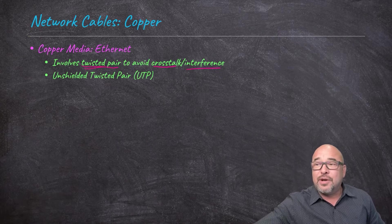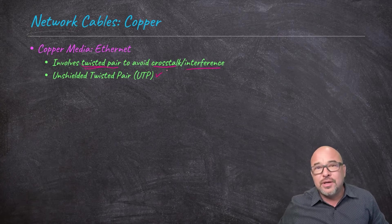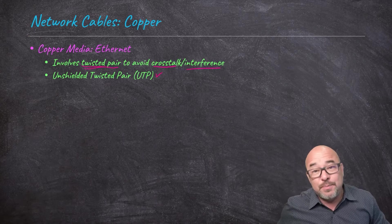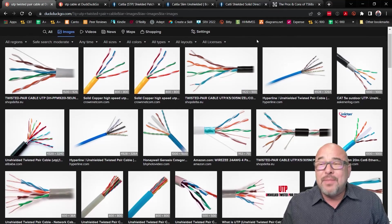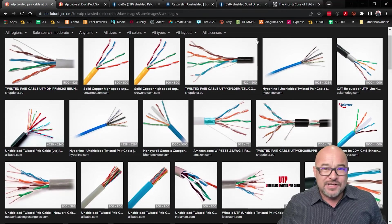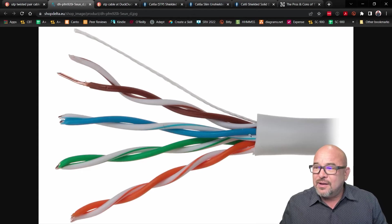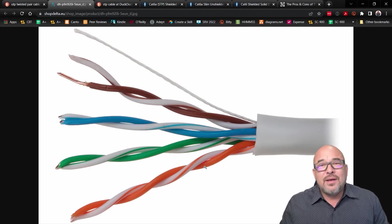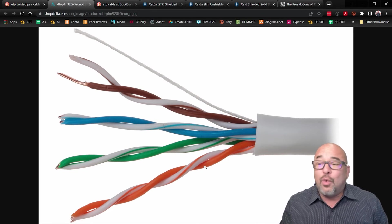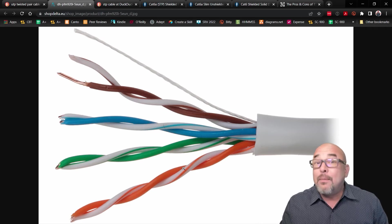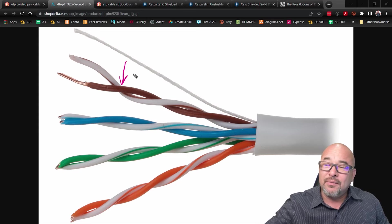Now, the reason why they're twisted is to avoid crosstalk and other types of interference, because if you have crosstalk and interference as data is being sent across that wire, then it will slow the wire down. Both sides of the transmission will have to say, I didn't get that. Can you resend that again? So a lot of retransmissions would have to take place if network communication is even possible. So that's why the pairs are twisted to avoid that kind of a problem.